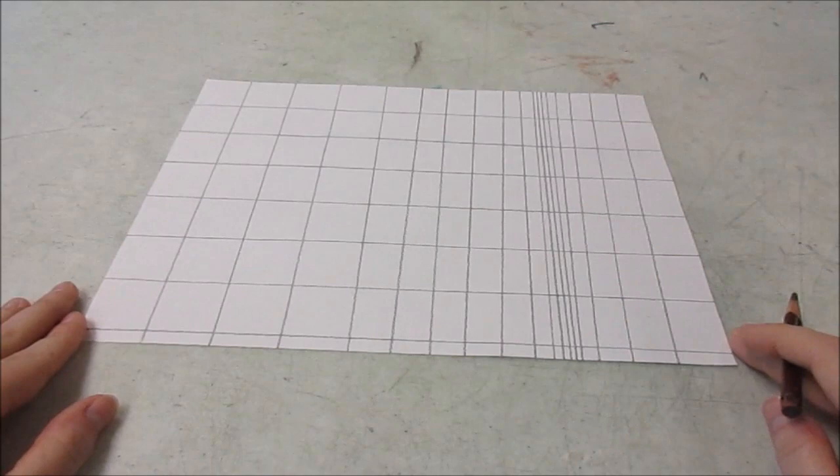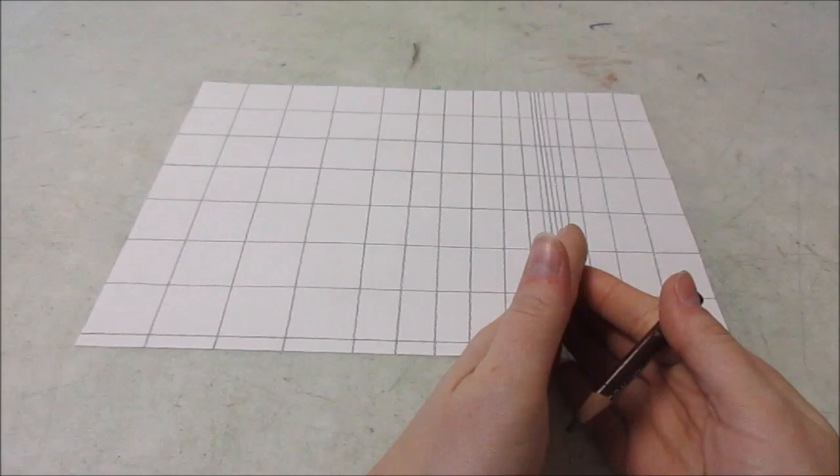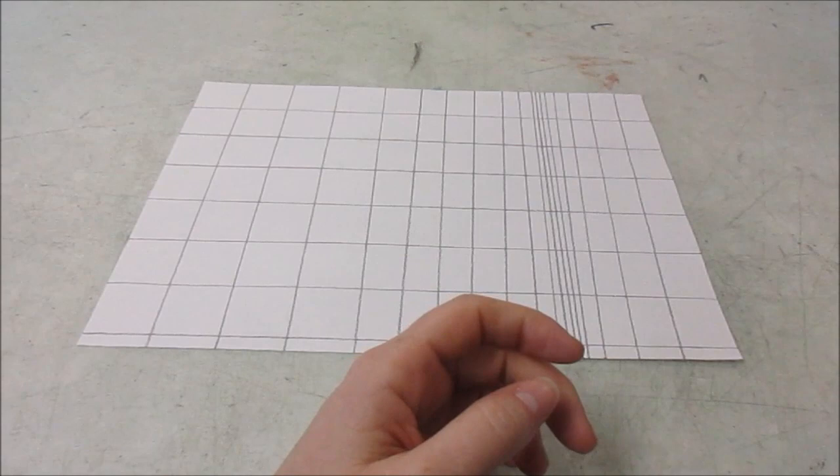So right now it just looks like we've got squares and then they turn into rectangles. So the whole illusion isn't quite there. What's going to make the illusion really show up is coloring it.